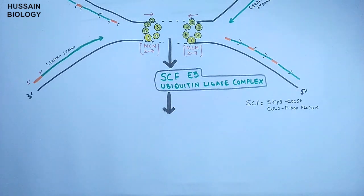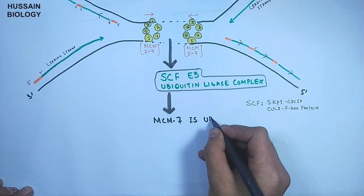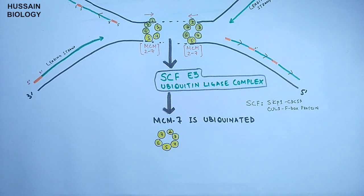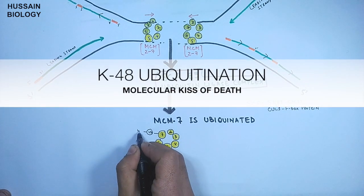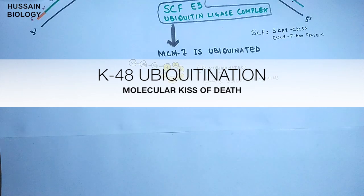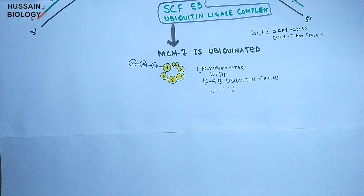This protein comes in and catalyzes the ubiquitination of MCM protein on its 7th protein. So MCM gets polyubiquitinated on its lysine residues called the K48 ubiquitin chain. K is the symbol for lysine, and this K48 ubiquitination chain mostly takes the protein for degradation by proteasomes.